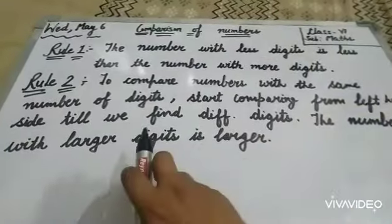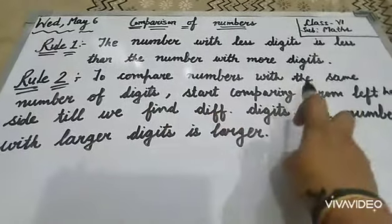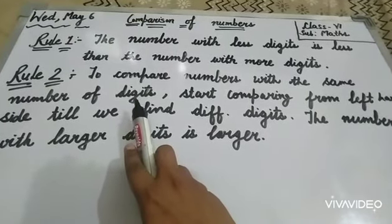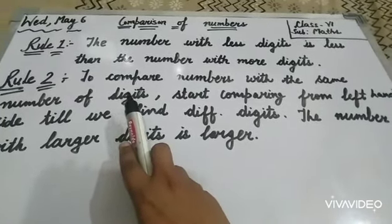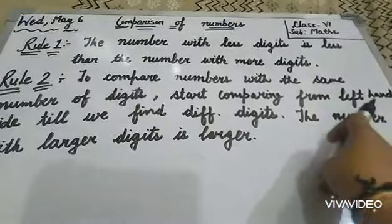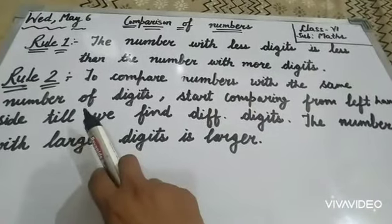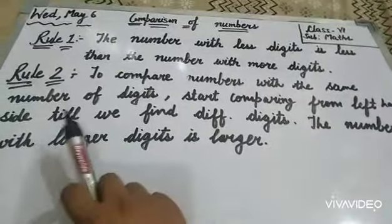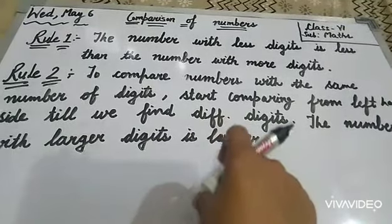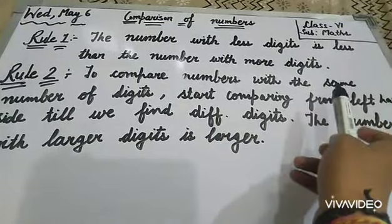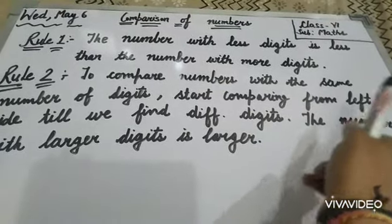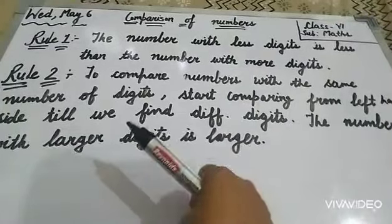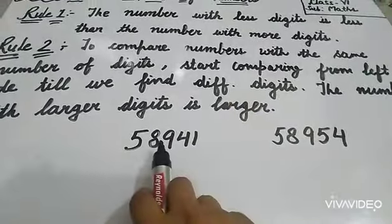Now the second rule is to compare numbers with the same number of digits. When you have the same number of digits, how will you compare? You have to start comparing from the left-hand side until we find different digits. The number with larger digits is the larger. Now let's take an example.